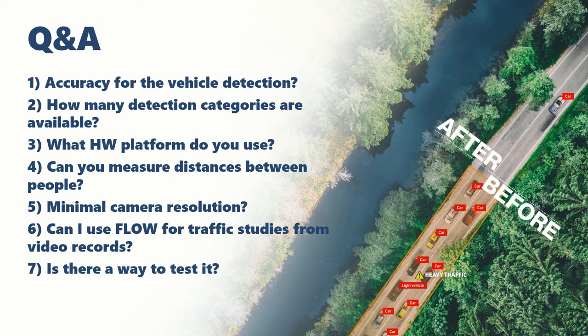Moving to the next question: how many detection categories are available? In the standard mode, there are seven classes available in Flow: car, light vehicle, heavy vehicle, bus, motorcycle, bicycle, and pedestrian. But it can be extended up to 16 classes because it can be customized for your own project.